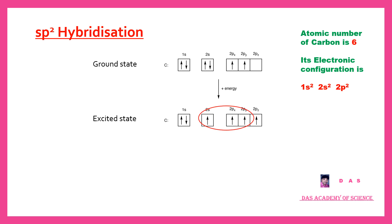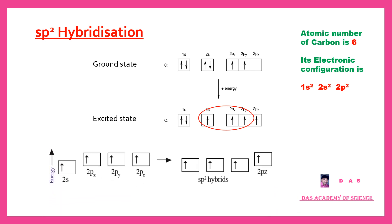But in SP2 hybridization, the 2S orbital and only 2 P orbitals — that is 2Px and 2Py orbitals — undergo hybridization. Since 1 S orbital and 2 P orbitals undergo hybridization, this is called SP2 hybridization. The newly formed hybrid orbitals are called SP2 hybrid orbitals. The 2Pz orbital does not participate in hybridization and remains unchanged. So only 3 SP2 hybrid orbitals are formed, and the 2Pz orbital remains the same.